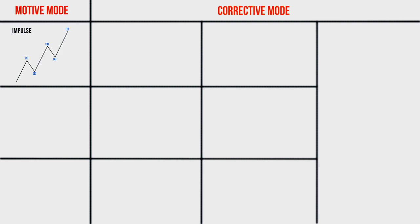Now let's look at each of these waves in more detail and name their key features. Let's start with the waves of the motive mode, beginning with the impulse, as this is the most popular and common wave. Impulse consists of five waves and is denoted by numbers like all waves of a motive mode. The first, third, and fifth waves develop in the motive mode and the second and fourth waves develop in the corrective mode. In fact, impulse is a trend — the most significant and powerful movements in the market take place in the impulse form.